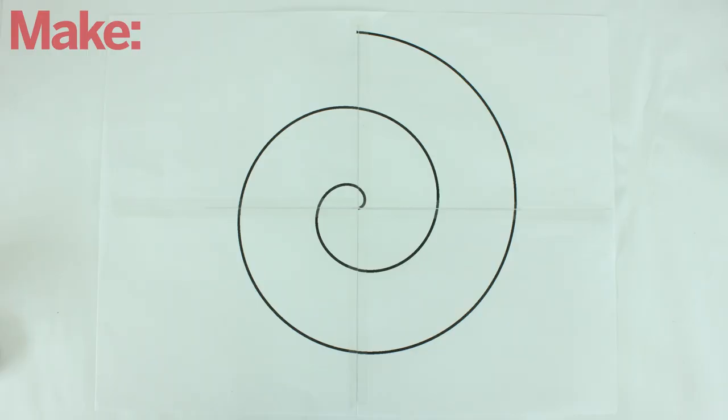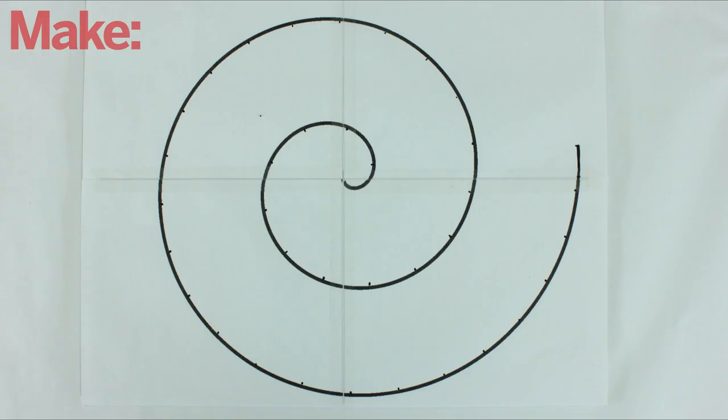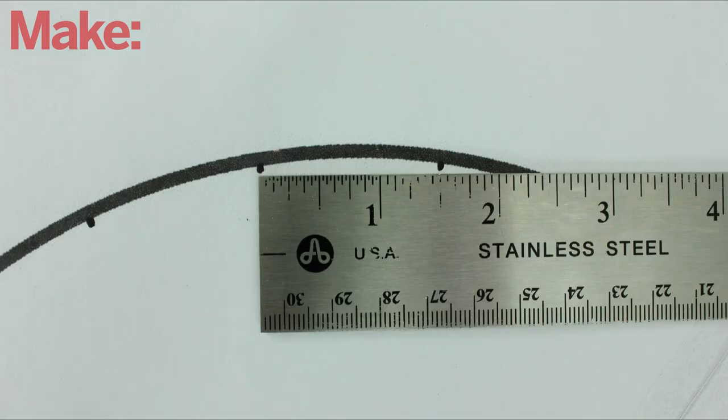Next you need to print out a top view outline of your design. Mark the locations where each of the lines will be attached. I spaced my test tubes out by about an inch and a half center to center.